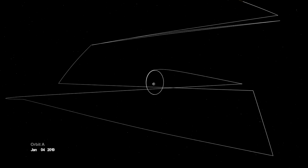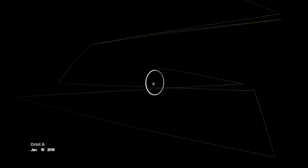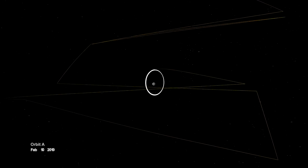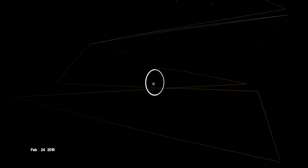On New Year's Eve, OSIRIS-REx was captured into orbit by Bennu's minuscule gravity, making it the smallest world ever to be orbited by a spacecraft.